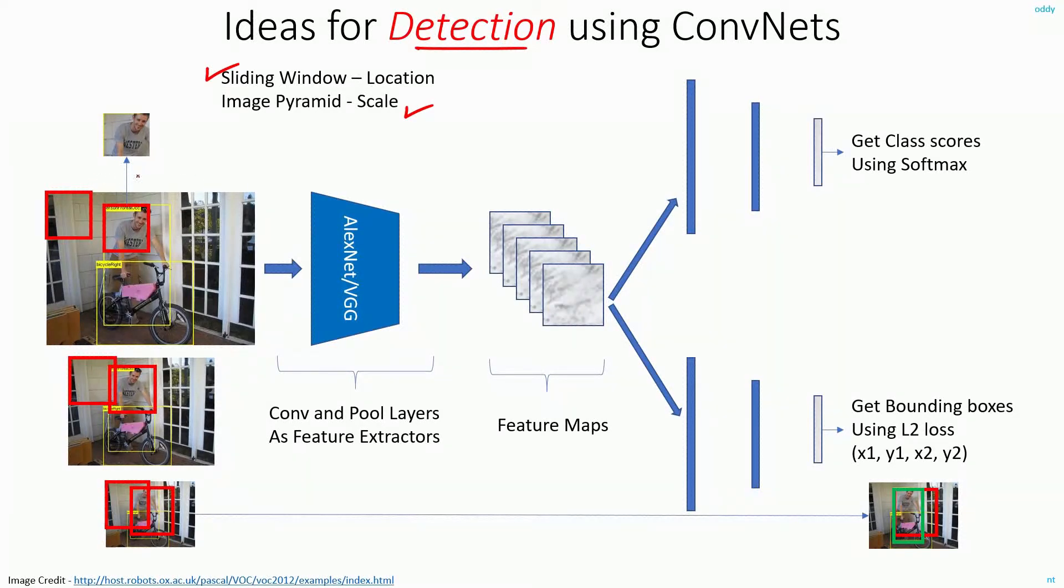At each sliding window, my initial idea was to take the crop of the image and then feed it as input to my convolutional neural network. And why did I have to take the crops and not feed the entire image as input? Because the CNNs usually accept fixed size input. That is the reason why I had to take the crops of the image instead of feeding the entire image as input to the neural network.